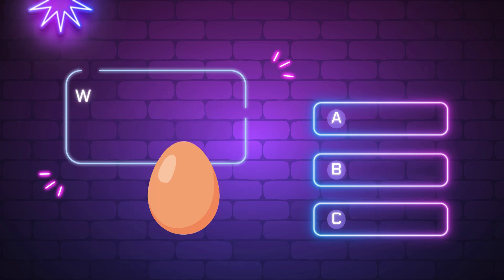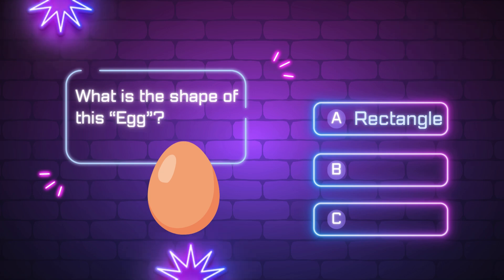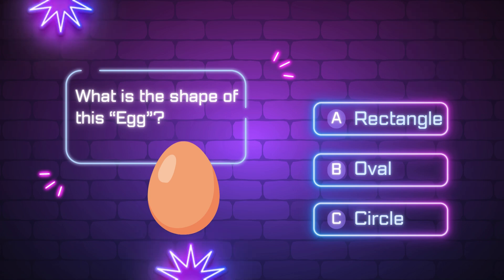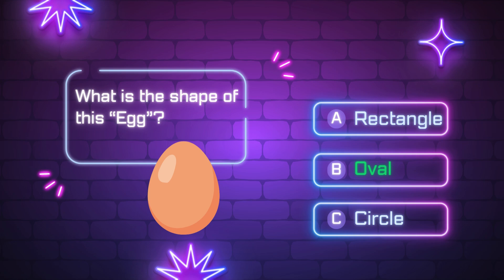What is the shape of this egg? A, rectangle. B, oval. C, circle. Yes, it is oval.